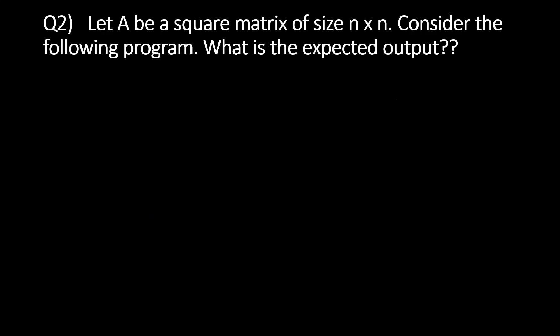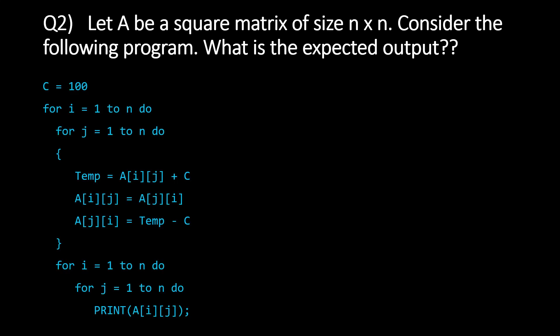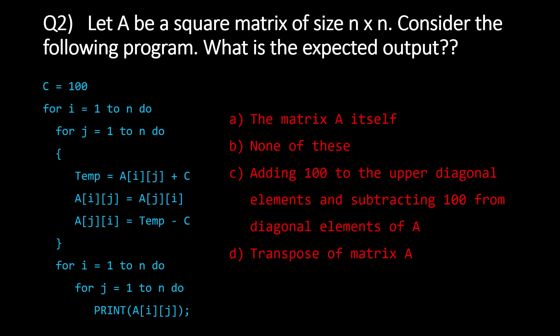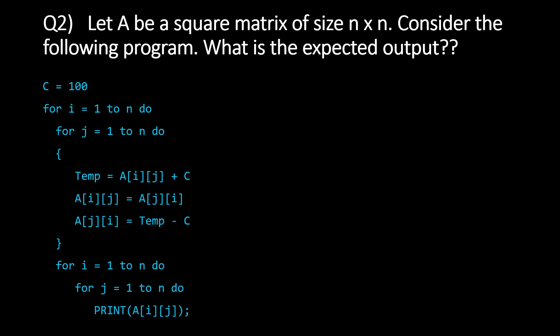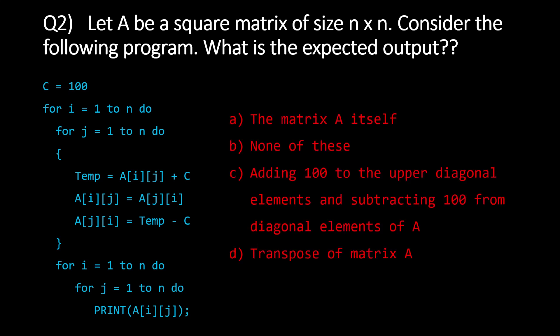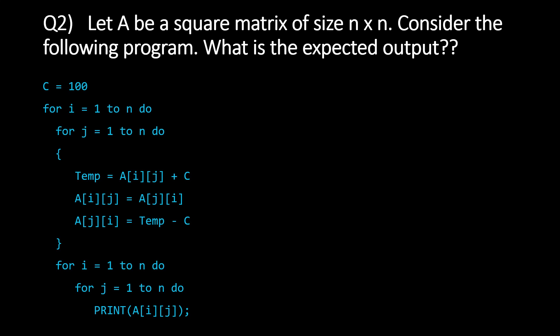The second question reads: let A be a square matrix of size n. Consider the following program — what is the expected output? The code sets C equal to 100, then loops over all I and J, computing temp = A[I][J] + C, setting A[I][J] = A[J][I], and A[J][I] = temp - C, then prints the matrix. Options are: the matrix A itself, none of these, adding/subtracting 100 from diagonal elements, or transpose of A.